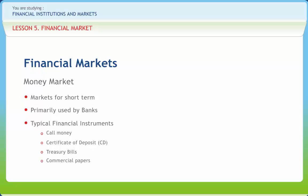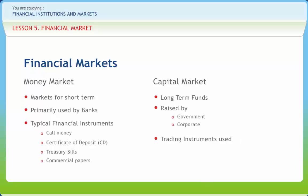The capital market is the market for securities where companies and governments can raise long-term funds. It is a market in which money is lent for periods longer than a year. The different types of financial instruments traded in capital markets include shares, equity instruments, credit market instruments, insurance instruments, foreign exchange instruments, bonds, hybrid instruments and derivative instruments.